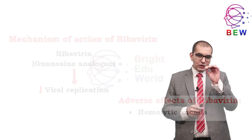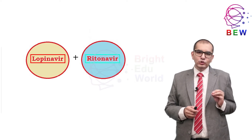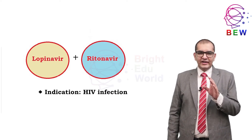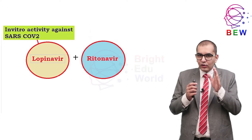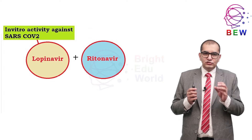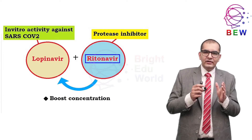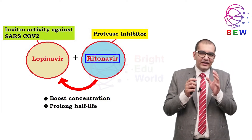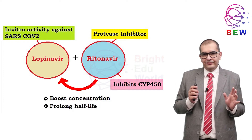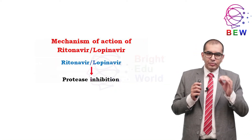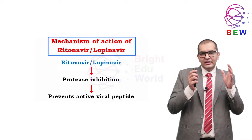The next drugs are lopinavir and ritonavir. This combination is typically used for HIV infection; however, lopinavir has demonstrated in vitro activity against coronavirus. Ritonavir is also a protease inhibitor, but its primary role is to boost lopinavir concentrations and prolong the half-life of lopinavir through cytochrome P450 inhibition. The mechanism of action is protease inhibition that prevents production of active viral peptides.